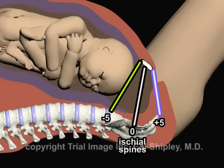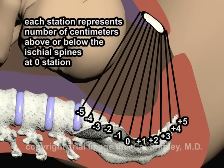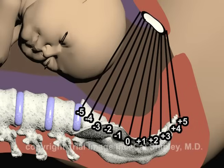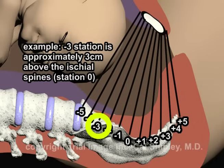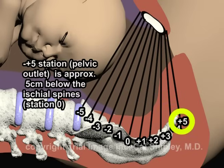The ischial spines are assigned a fetal station value of zero. In between minus five, zero, and plus five, fetal stations are assigned sequential values. Each of these fetal station values represents the number of centimeters above or below the level of the ischial spines. For example, the minus three station is approximately three centimeters above the level of the ischial spines at zero station, whereas plus five at the pelvic outlet is approximately five centimeters below the level of the ischial spines at zero station.